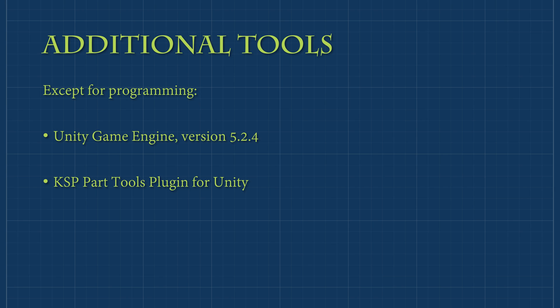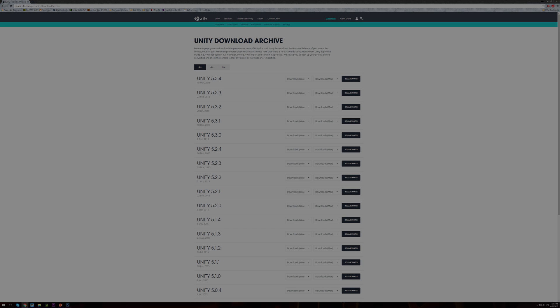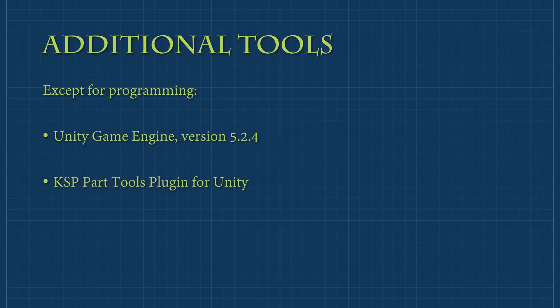In all cases except programming, modders will require the Unity game engine version 5.2.4. This software has both a free and a paid version; however, modders will never need to purchase the paid version, as the features it unlocks are irrelevant to modding KSP. Along with Unity, you will also need a series of Unity plugins developed by Squad called Part Tools. I've included download links to Unity and a direct download link from KerbalSpaceProgram.com for the Part Tools package. Simply download and install the appropriate version of Unity and register an account. You may download the Part Tools package now or later, as I will explain their installation in later videos.